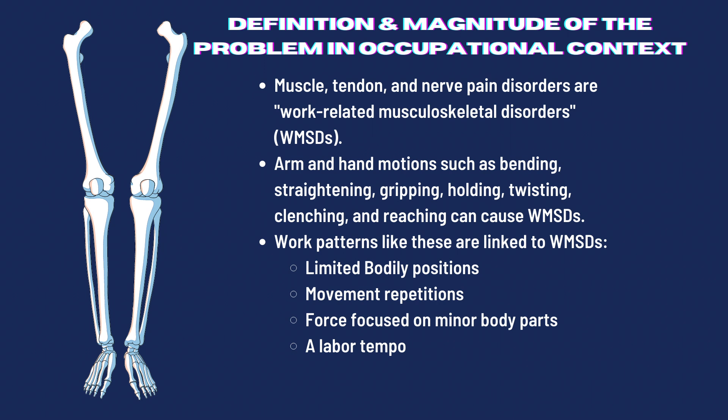For the first part of work-related musculoskeletal disorders — what exactly is this? Muscle, tendon, and nerve pain disorders are work-related musculoskeletal disorders, or WMSDs. Examples encompass thoracic outlet syndrome, tension neck syndrome, carpal tunnel syndrome, and tendonitis. Arm-in-hand motions such as bending, straightening, gripping, holding, twisting, clenching, and reaching can cause WMSD.